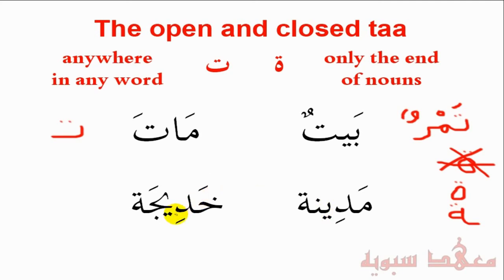So here medīnah means 'a city' and khadījah is a female name. The tā' marbūṭa is also a sign of femininity, so you find it in a number of female words. Thirdly, if you actually pronounce the last letter with the harakah — for example, say khadījatuN — notice we pronounce the tā'. If we stop at the tā', it becomes khadījah — a hā'. Similarly, medīnah or madīnatun if we add the tanween.